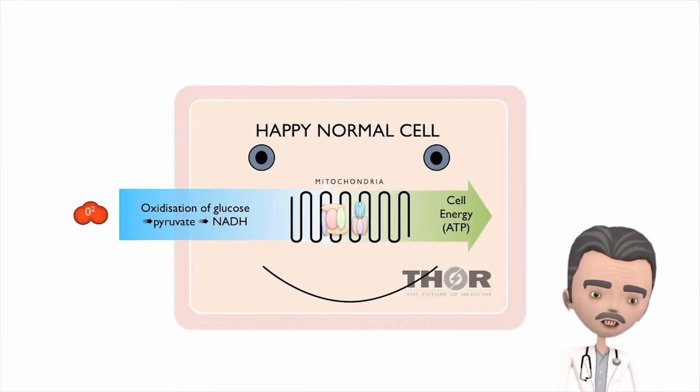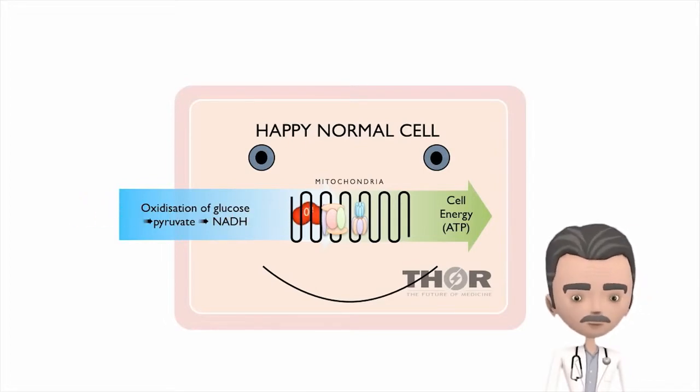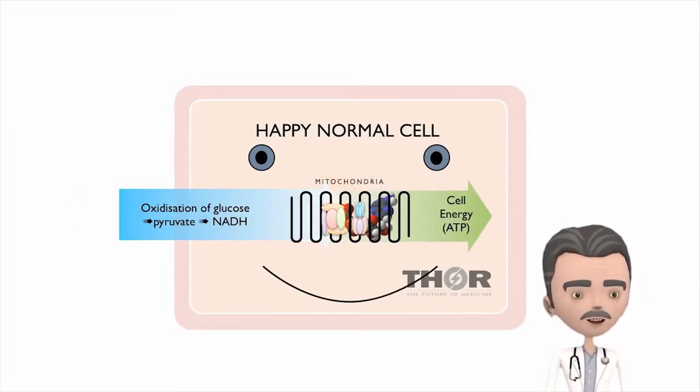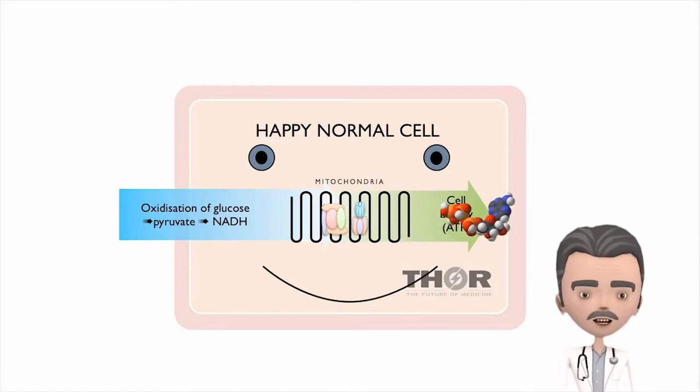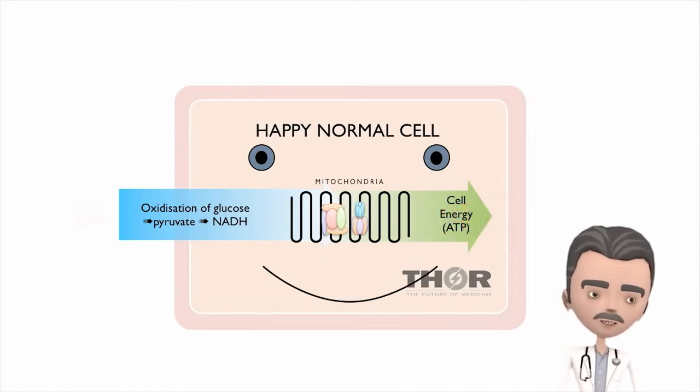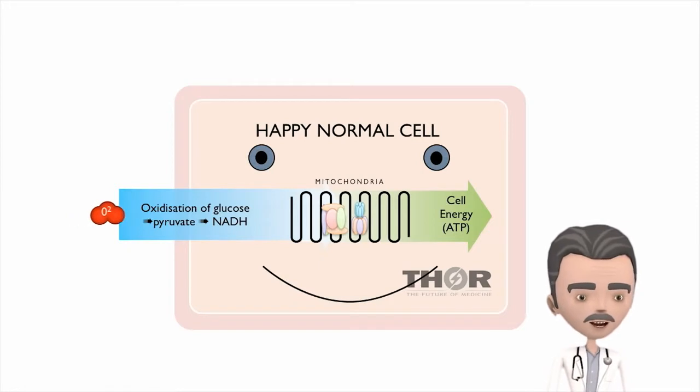This is a normal cell. Cytochrome C oxidase, the terminal enzyme in the electron transport chain, is combining oxygen with NADH to make the hydrogen ions that drive ATP synthase.